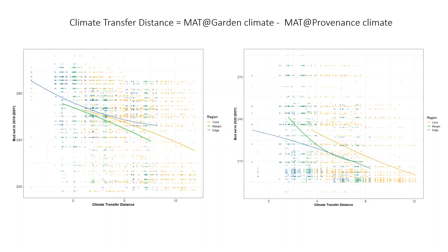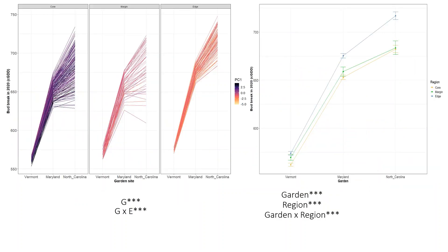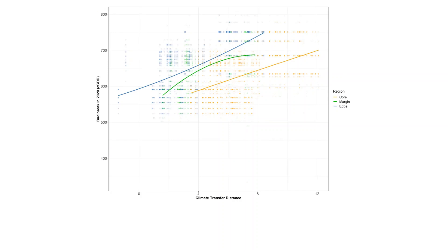In order to understand the magnitude of changes in bud set timing, I looked at it in terms of climate transfer distance, calculated as the difference in mean annual temperature at the garden site and provenance source. The x-axis indicates increasing transfer distance as increasing temperature compared to source, and bud set timing is plotted on the y-axis. As you can see, with increasing temperatures the buds tended to set earlier for all three regions. For bud break, the y-axis is in cumulative growing degree days required before buds flushed. Vermont garden required the least amount of heating units to flush buds compared to Maryland and North Carolina. The warmer edge region required the most amount of heating units to flush buds compared to the colder core region, and the heating units required increased with warming temperature.